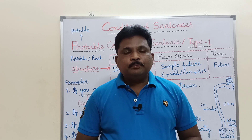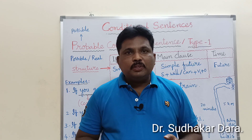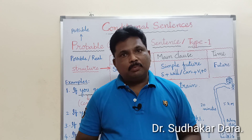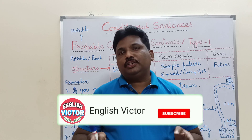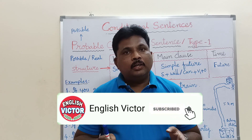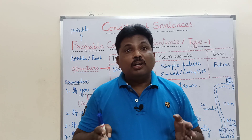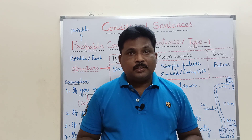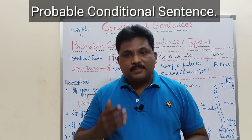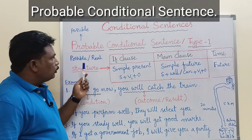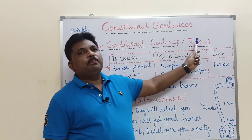Dear students, so far we have seen the difference between main clause and subordinate clause, and the main kinds of conditional sentences: probable conditional sentence, improbable conditional sentence, and unfulfilled conditional sentence. In this video we are going to see probable conditional sentence. Look at the board — probable conditional sentence is also called Type 1 conditional sentence.